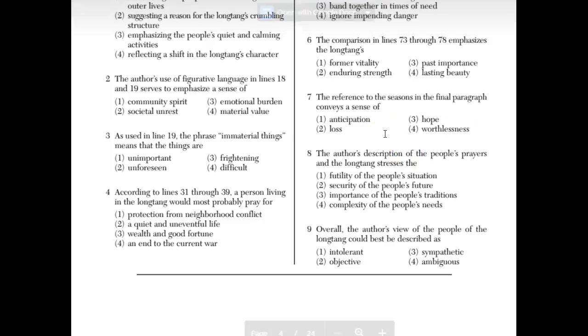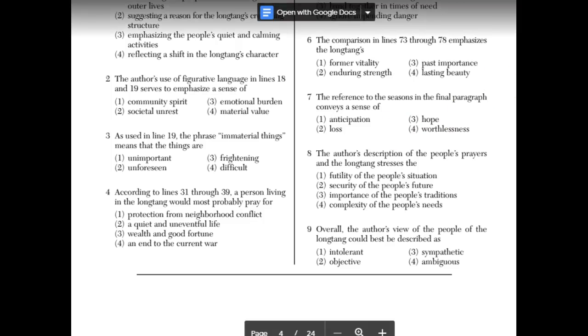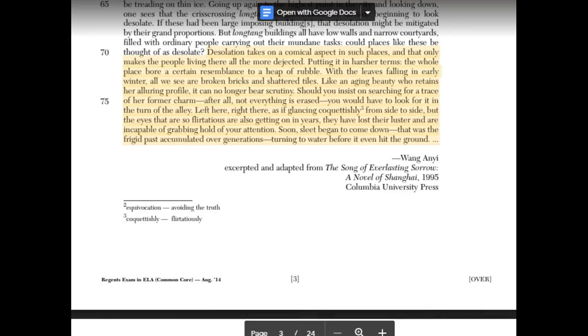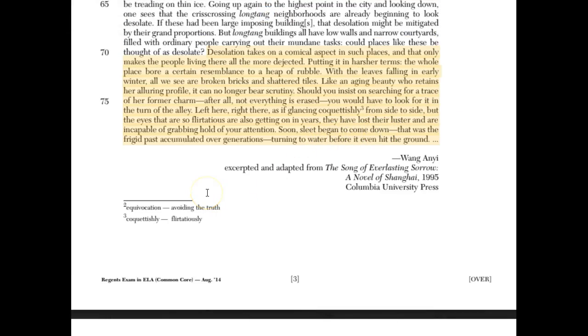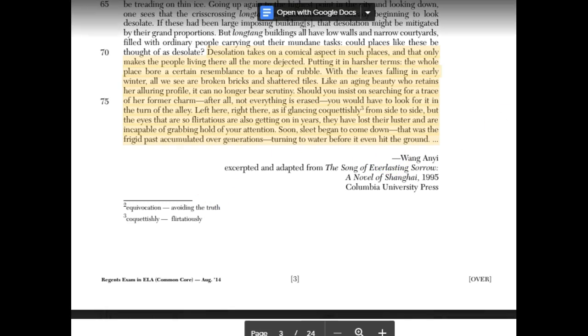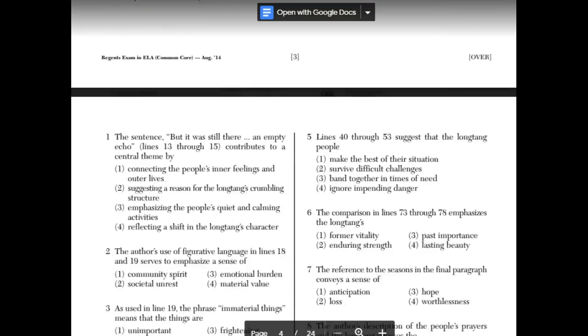Okay. Seven. The reference to the seasons. So, I know it was talking about the winter, frigid, right here. The sleet began to come down, the ground is frigid, turning the water before it even hit the ground. So that's a very dark, sad image. Winter usually means things are gloomy. So, let me see what the choices are.